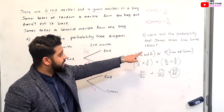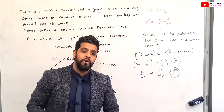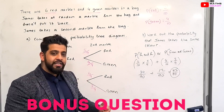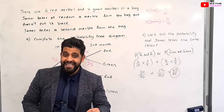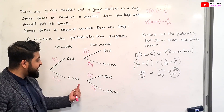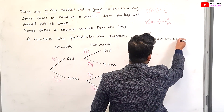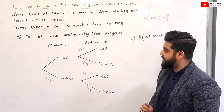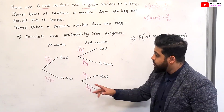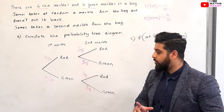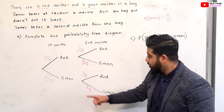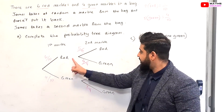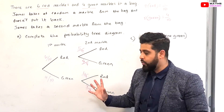So the probability that James takes the same colour is 42 over 90. I want to add a bonus question: what is the probability of selecting at least one green? Looking back at our probability tree diagram, we want all combinations of having at least one green — we can have green and green, or green and red, or red and green.